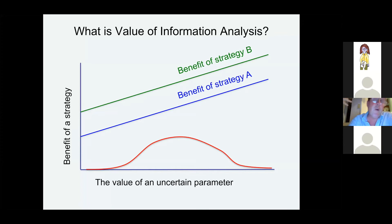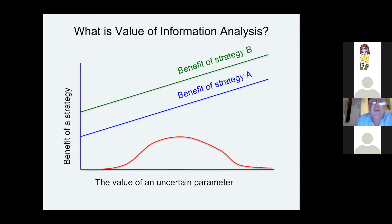You might have two strategies: one might be putting up nest boxes, one might be planting trees — Strategy B and Strategy A. If Strategy B is always better than Strategy A regardless of the uncertain parameter, you don't have to resolve the uncertainty. Even though you're making wildly different predictions about the fate of this species, it doesn't matter — Strategy B is always going to be the best strategy. Don't gather more data on that issue if it doesn't change what is the best thing to do.